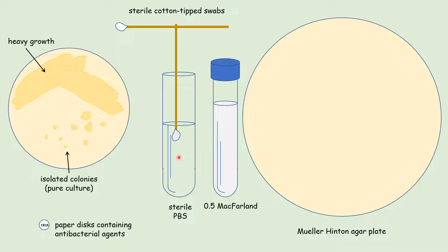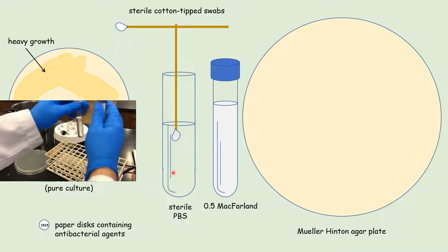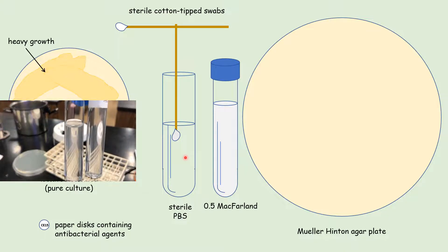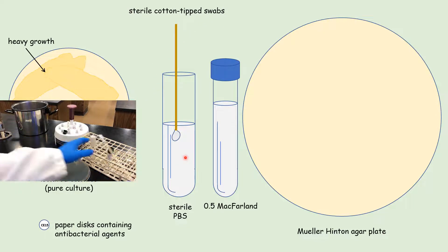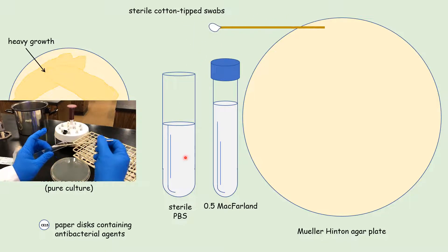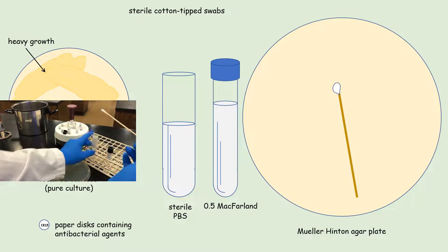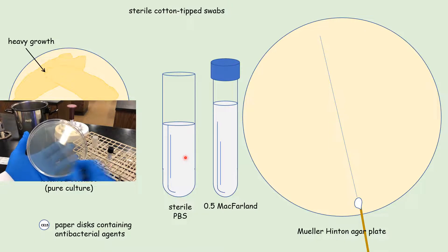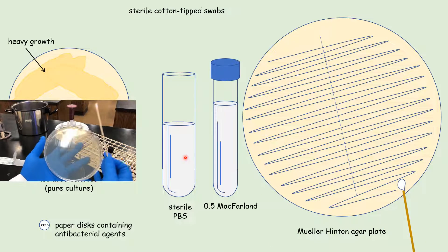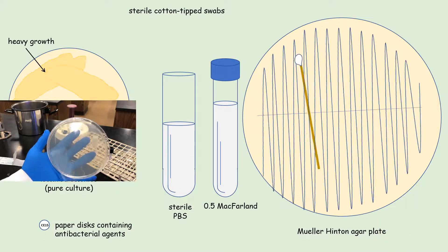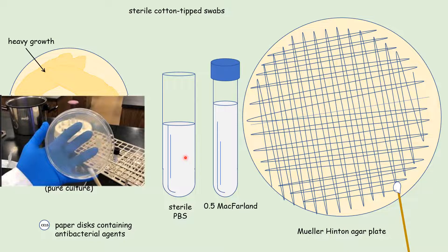This is important because if we add too much bacteria, we might overwhelm the system; if we have too little, we might not get a nice zone of inhibition. So we want approximately 1.5 times 10 to the eighth bacterial cells per mL. Then we take our second swab, dip it into the bacterial suspension, wring out the edges so it's not too wet, and streak it across the center of the Mueller-Hinton agar plate. We spread bacteria over the entire surface, rotating the plate and swabbing in opposite directions to ensure even coverage.